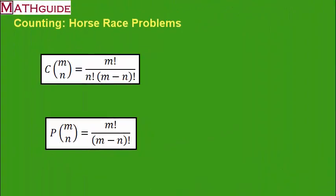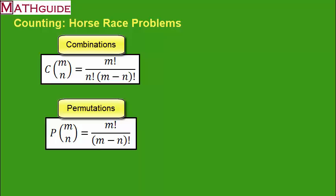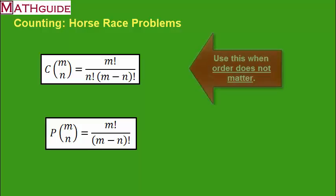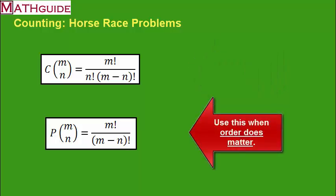Here are the two formulas we use for horse race problems. The top formula is called the combinations formula, marked with a C. The bottom formula is called the permutation formula, marked with a P. The key thing to keep in mind when selecting between these two formulas is whether or not order matters. If the order of the horses finishing does not matter, we use the combinations formula. If we're interested in exactly which horse finishes before another, order does matter and we use the permutation formula.